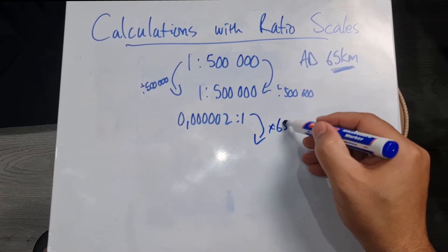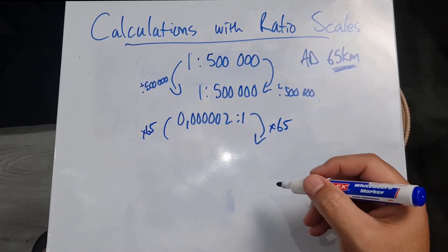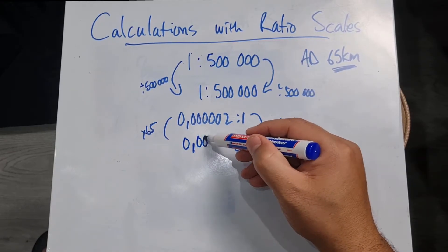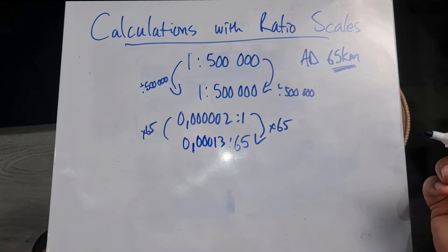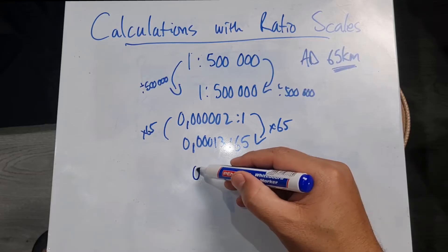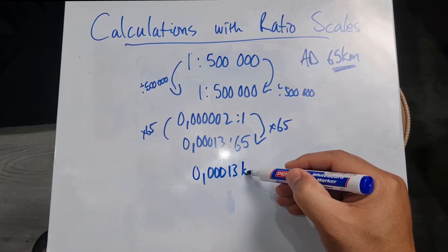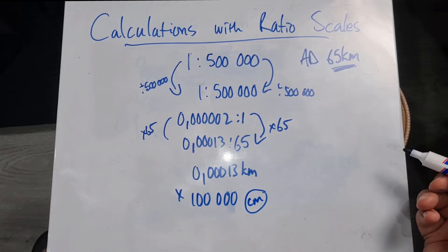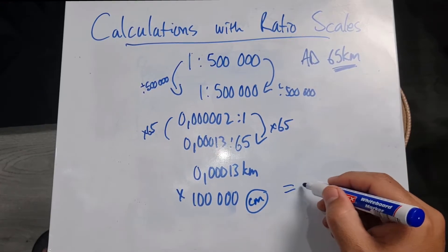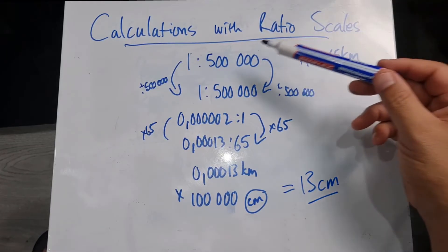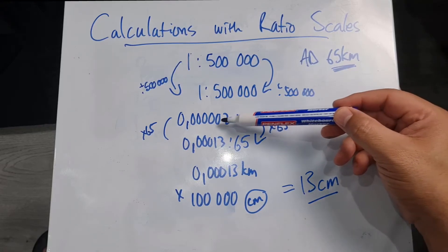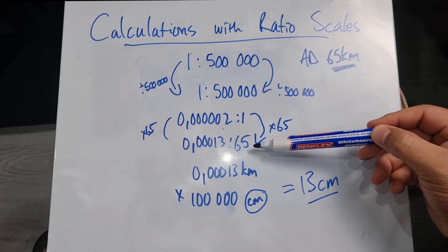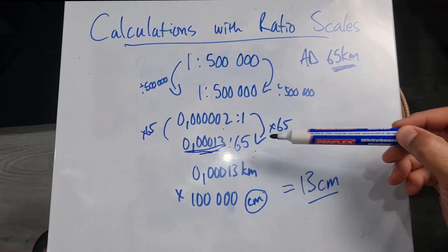Now they wanted me to work out 65 kilometers, so I'm going to multiply by 65 on both sides. I'll end up with 65 on one side and 0.0000130 on the other side. What that is essentially saying is 0.0000130 kilometers. I'm then going to multiply that by 100,000 to convert to centimeters, which gives me 13 centimeters. So I took my ratio back to its simplest form with one on the left, multiplied by the kilometers amount, then converted to centimeters to get my map measurement.